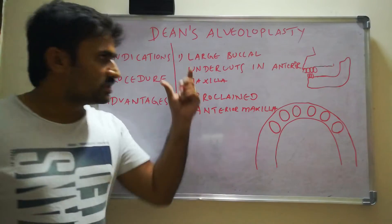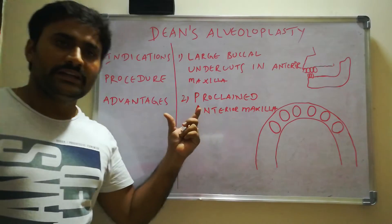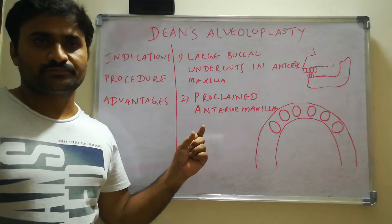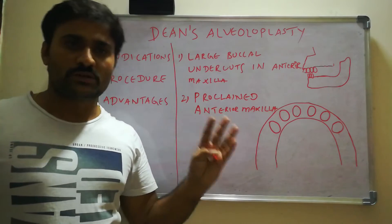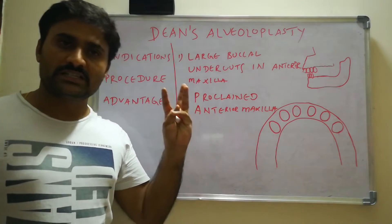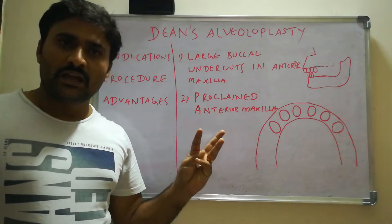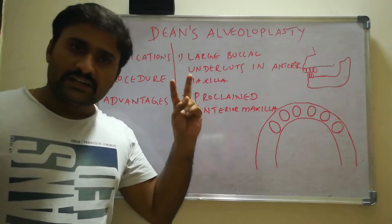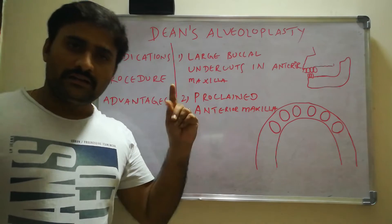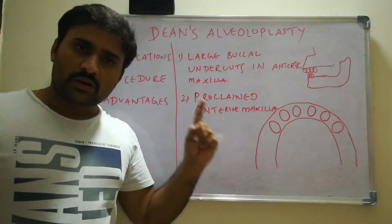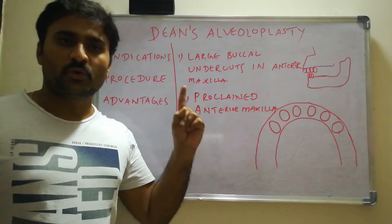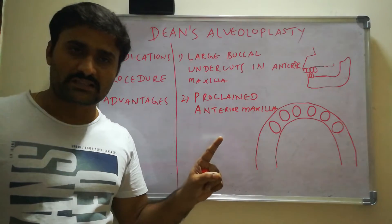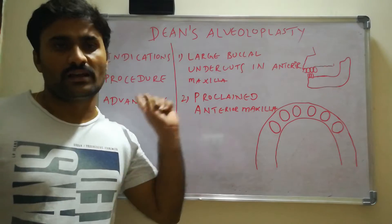So these are the indications of Dean's alveoloplasty. Three key points: Dean's alveoloplasty is done in the maxilla, commonly in the anterior region, and in the proclined anterior maxilla — also called the premaxilla — that is, proclaimed premaxilla.